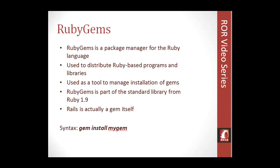RubyGems is a package manager for Ruby on Rails. It's basically little pieces of code that you can plug into your Ruby on Rails site. Rails itself is actually a gem. Once you have RubyGems, you can use the syntax gem install followed by the name of the gem. They can be thought of as modules or plugins, and they are used to distribute Ruby-based programs and libraries — chunks of code you can utilize in your app. RubyGems is part of the standard library from Ruby 1.9 on, and we will be using Ruby 1.9.3. Rails itself is a gem, and you can actually install Rails through RubyGems.